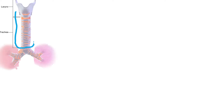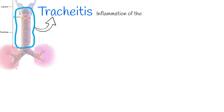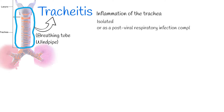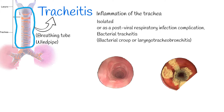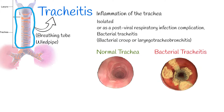Tracheitis is infection and inflammation of the trachea, also called the breathing tube or windpipe. It can occur in isolation or as a post-viral respiratory infection complication. Bacterial tracheitis, also known as bacterial croup or laryngotracheobronchitis, is a potentially lethal infection of the subglottic trachea in children and should be considered in the differential diagnosis of any child with acute upper airway obstruction.